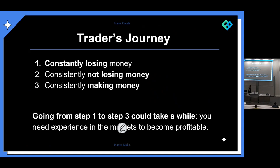After you've built some experience and are more familiar with the market, you move to the second stage: consistently not losing money. You're making profitable trades but just breaking even — you need to work on your risk management, find your edge, or stick to your plan. The final stage is consistently making money — you've honed your edge, you have good risk management, you know what trading setups to take, and your wins outweigh your losses consistently. Going from step one to step three could take a while.